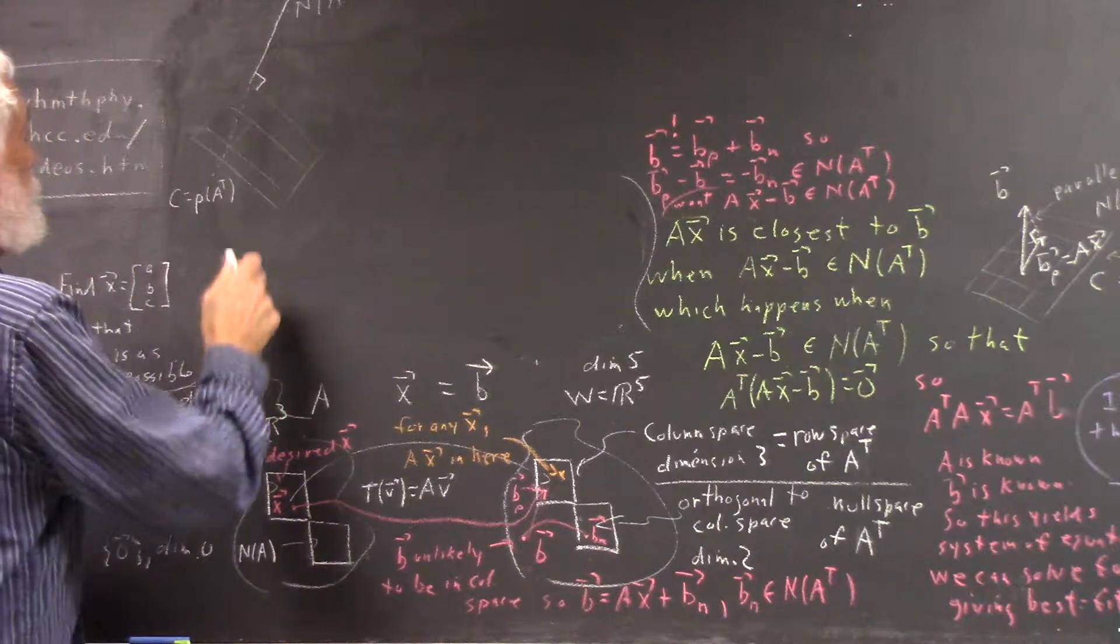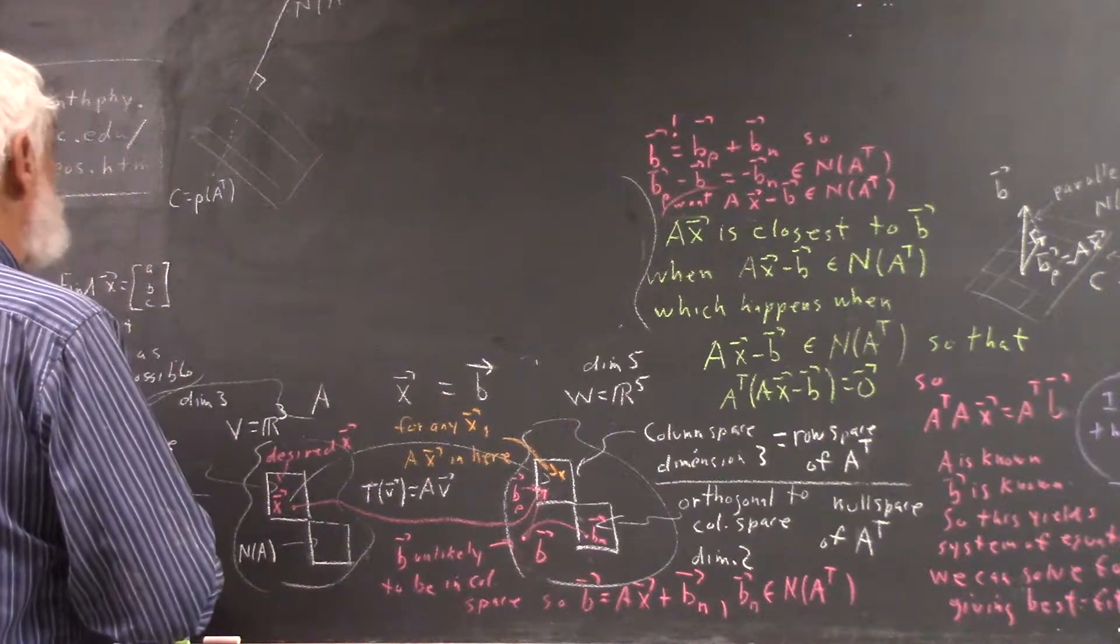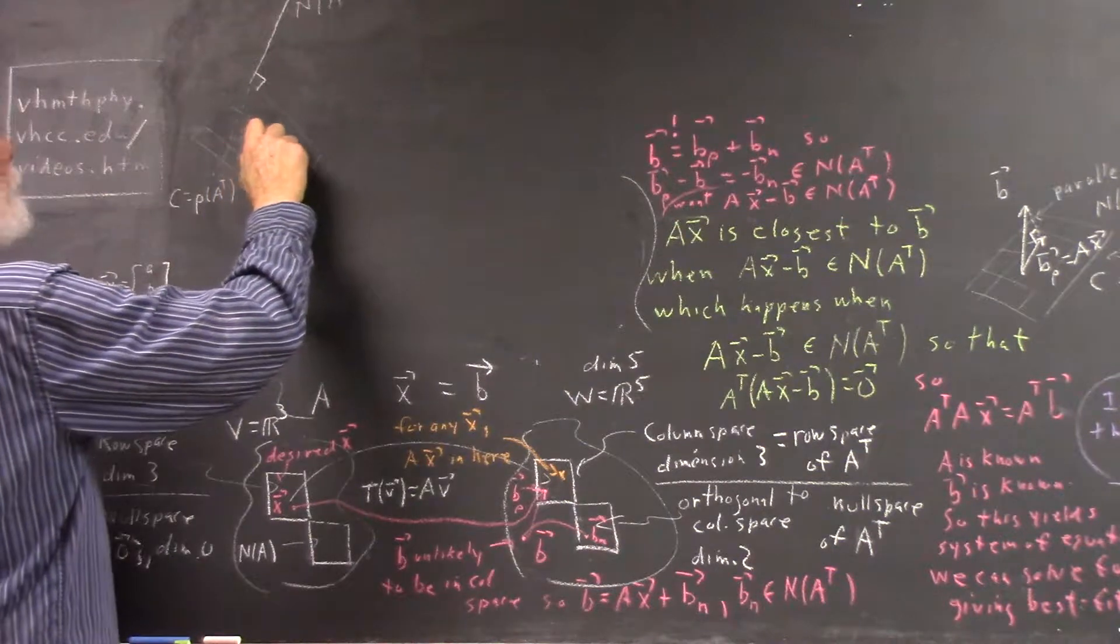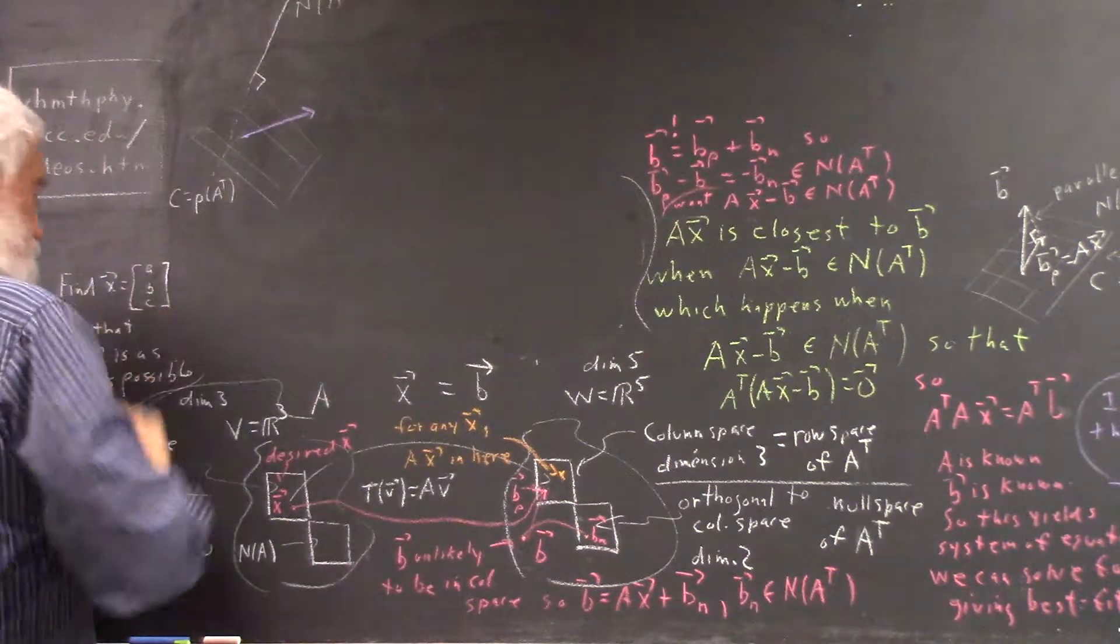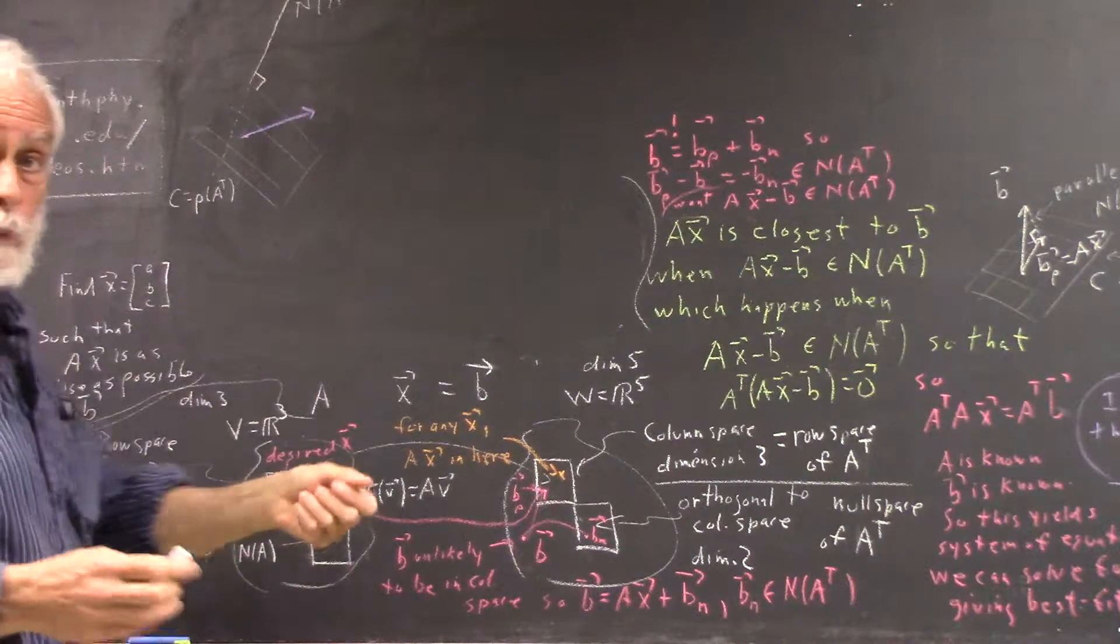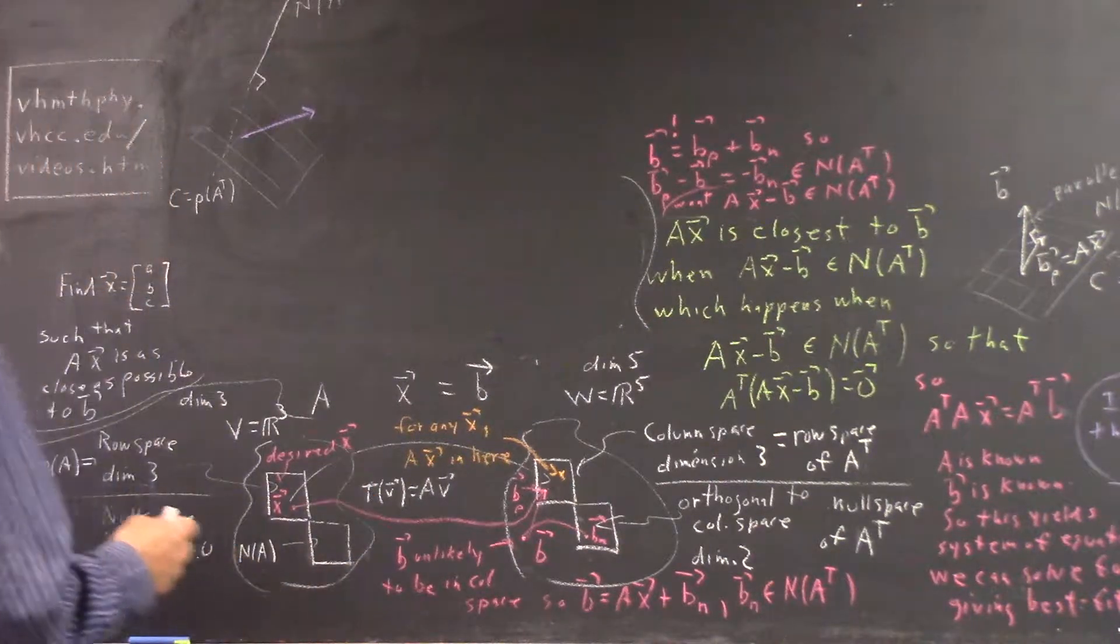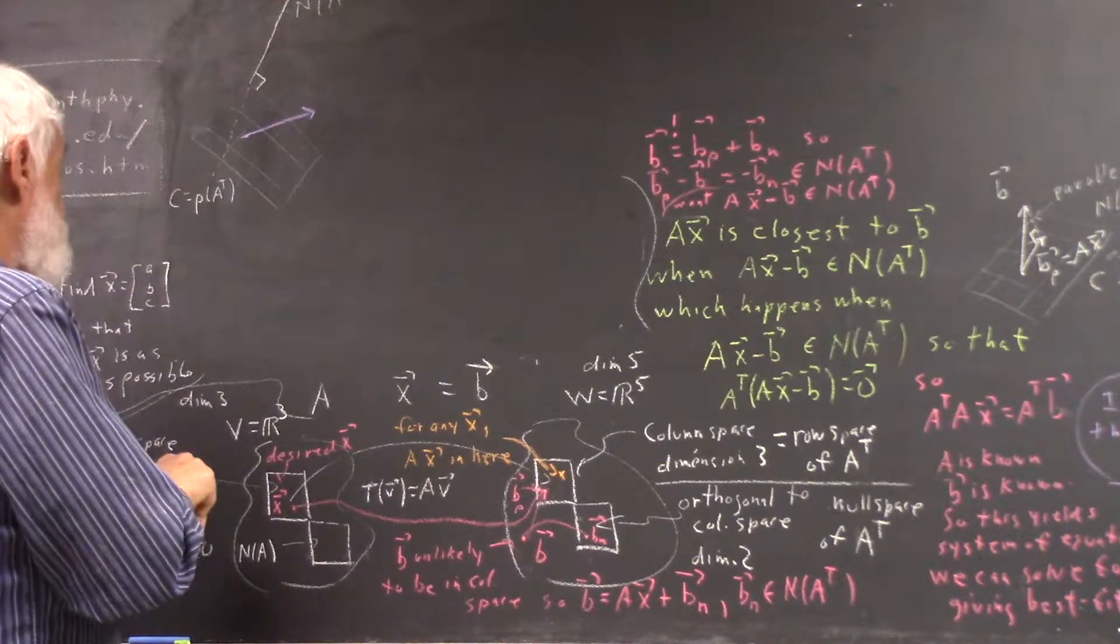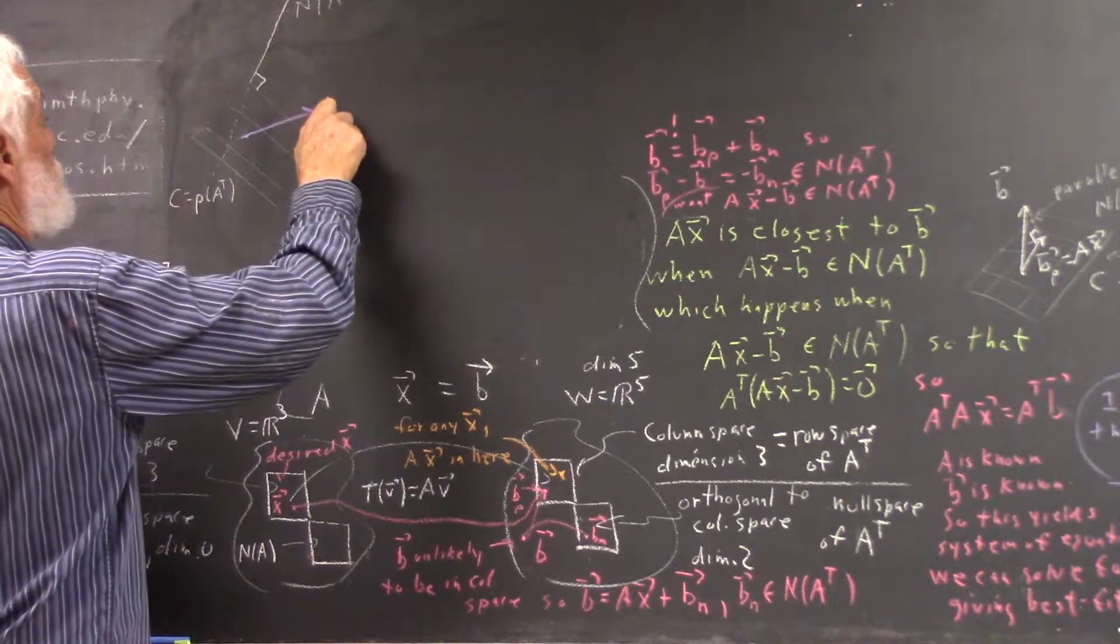So that if B is any vector that's not in the column space, and we've established that that's usually the case when we're doing a best-fit regression analysis. So if this is our vector B, the vector that we get from our data, the set of Y values in the depth versus time model.